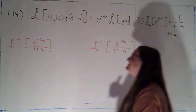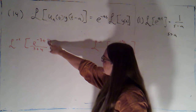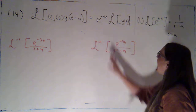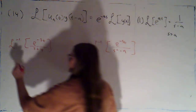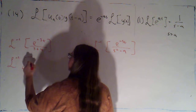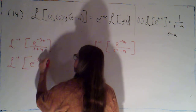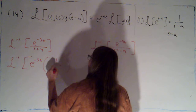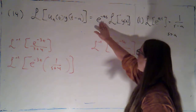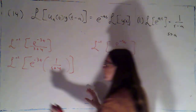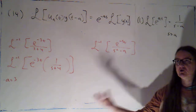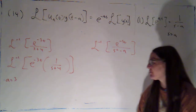Welcome back. Here I've got this fraction with e to the negative 3s on top over s plus 4. I want to write that as a product so it's easier to keep track of things. So I'm going to say that's the inverse Laplace transform of e to the negative 3s times 1 over s plus 4. That looks more like the formula, and I can see that my a here is going to be 3. So I'm going to be turning on some function that's translated 3 units to the right at time 3.